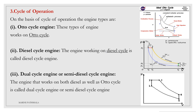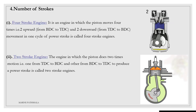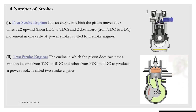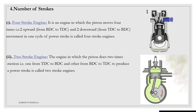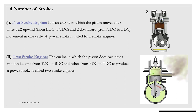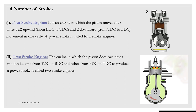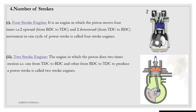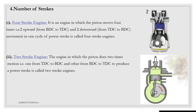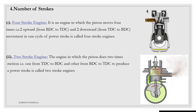The diagrams for Otto cycle engine, diesel cycle engine, and dual cycle engine are given on the right side for your convenience. The fourth classification is on the basis of number of strokes. Four stroke engine: it is an engine in which the piston moves four times — two upward from BDC to TDC and two downward from TDC to BDC — in one cycle to produce a power stroke. Two stroke engine: the engine in which the piston completes two strokes — one from TDC to BDC and one from BDC to TDC — to produce a power stroke.